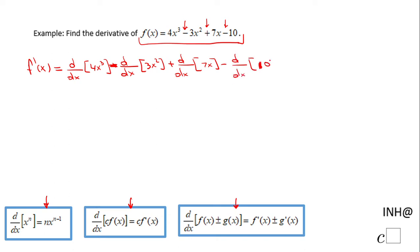Plus the derivative with respect to x of 7x minus the derivative with respect to x of 10. So I use the last rule, the sum or difference rule, and now I'm going to go to the next step and I'm going to use the second rule, the constant multiple rule.